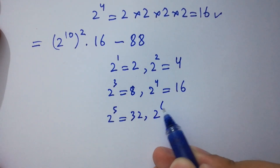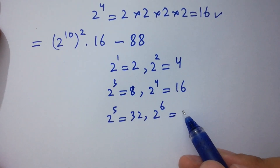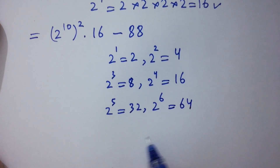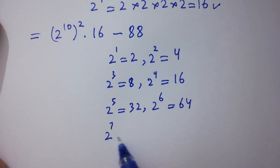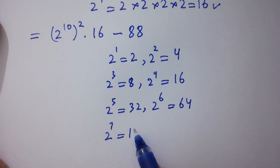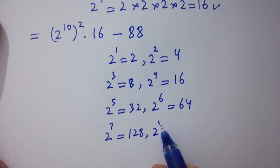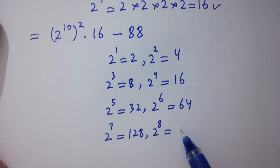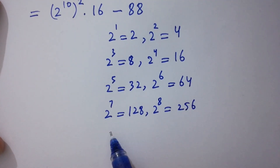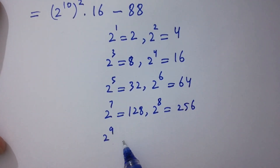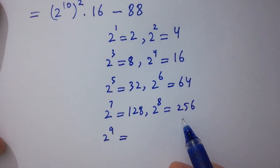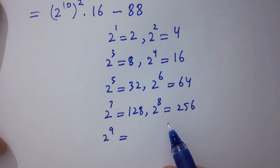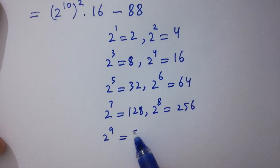2 to the power 6 equals 64. 2 to the power 7 equals 128. 2 to the power 8 equals 256. 2 to the power 9 equals 512.